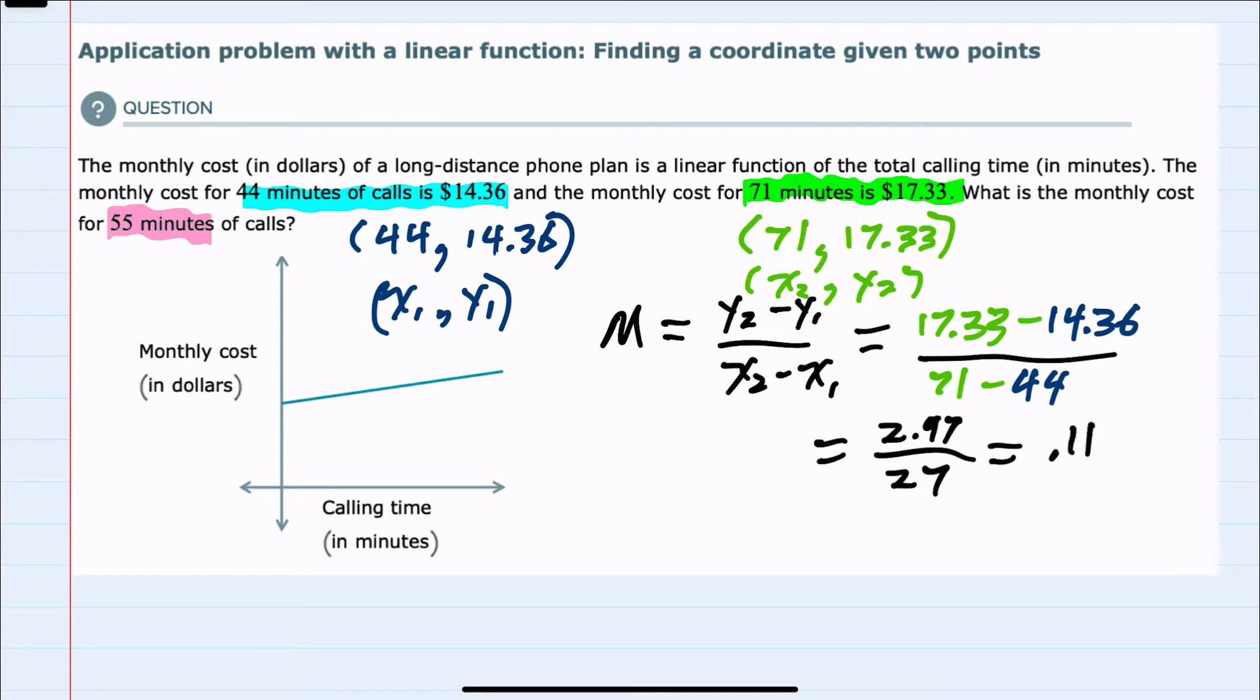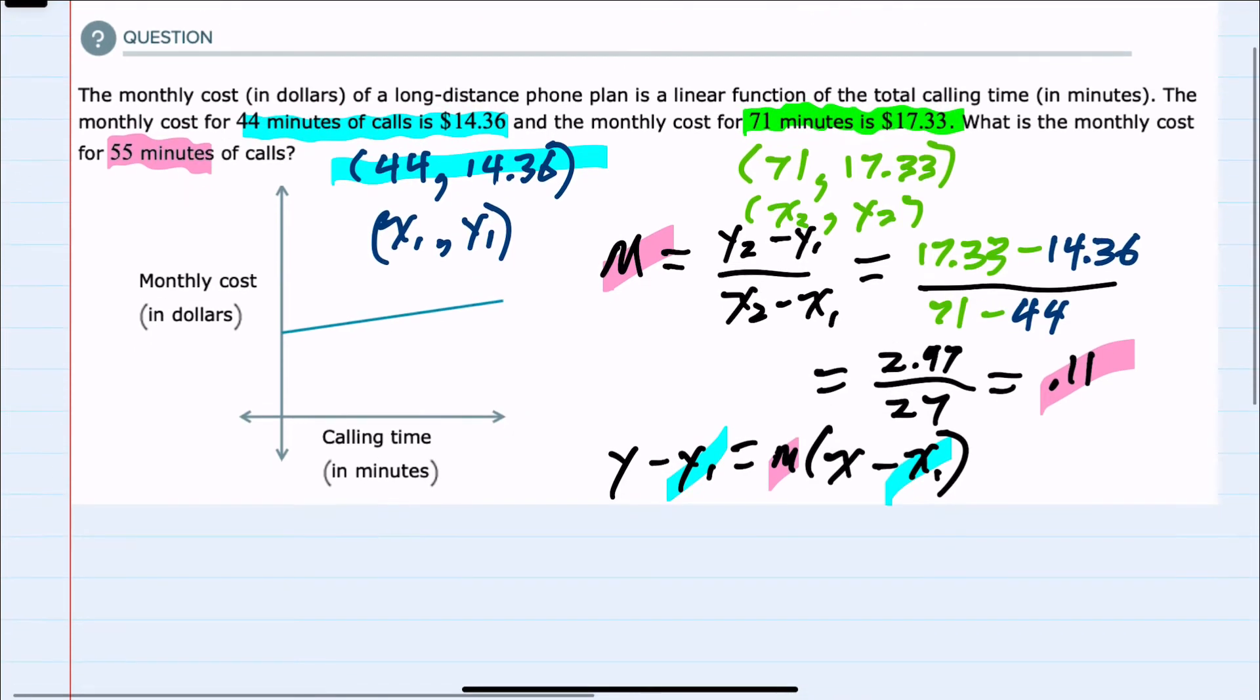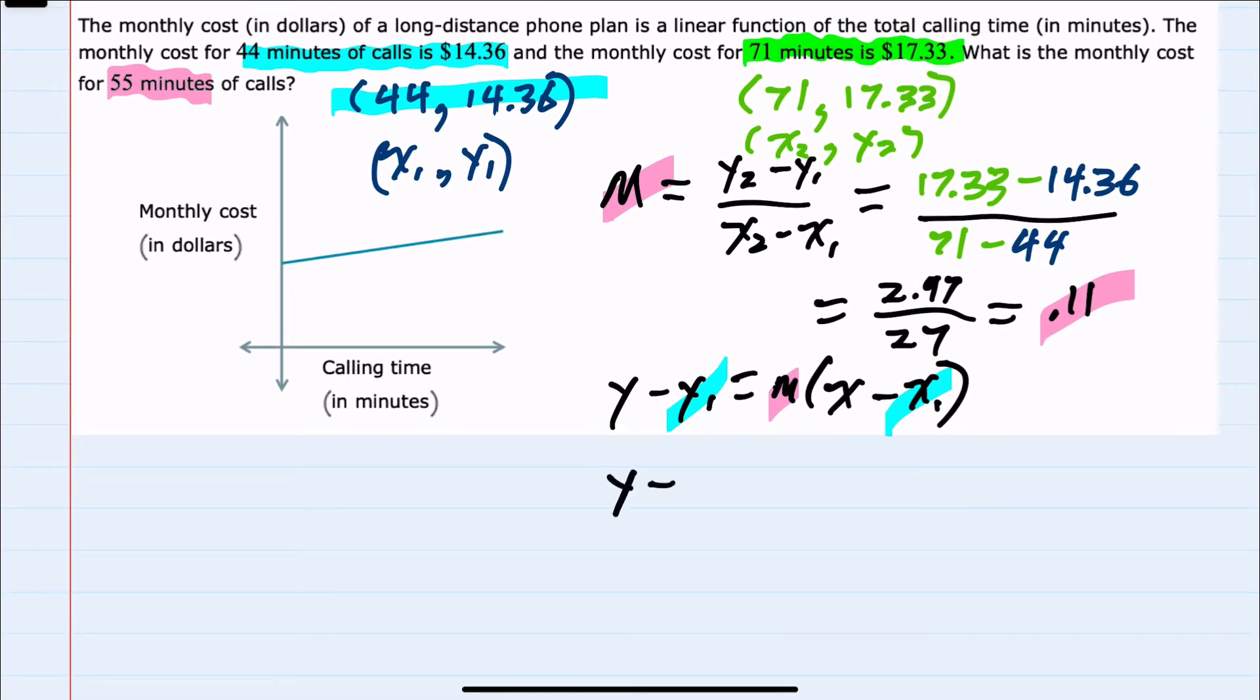Now that we have the slope of the line, we can use the point-slope formula: y minus y1 equals m times x minus x1. Since we have a point, I'll use the first one for x1 and y1, and we have a slope of 0.11. I can substitute those values in and have y minus 14.36 equals 0.11 times x minus 44.